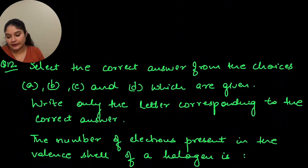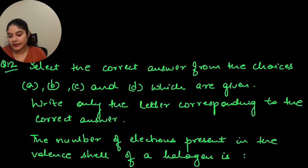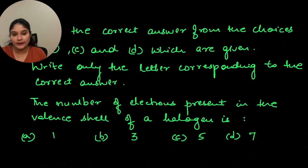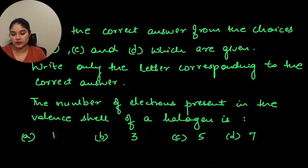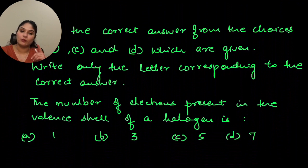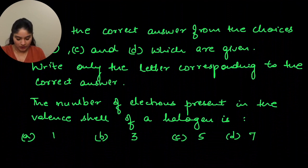Select the correct answer: the number of electrons present in the valence shell of a halogen is — halogens can just accept 1 electron, meaning they would have 7 electrons in the valence shell. So your answer will be 7.